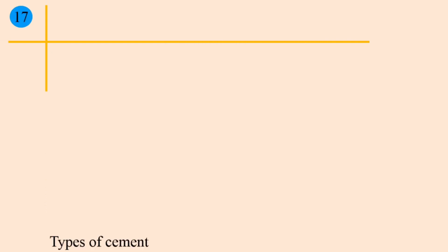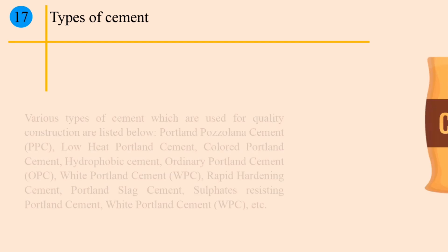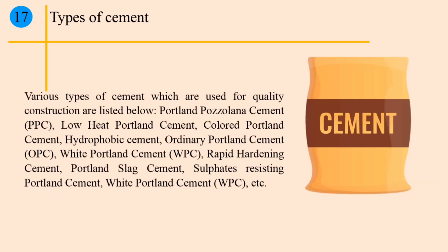Point 17: Types of cement. Various types of cement used for quality construction include: Portland Pozzolana Cement (PPC), Low Heat Portland Cement, Colored Portland Cement, Hygrophobic Cement, Ordinary Portland Cement (OPC), White Portland Cement (WPC), Rapid Hardening Cement, Portland Slag Cement, Sulfates Resisting Portland Cement, etc.